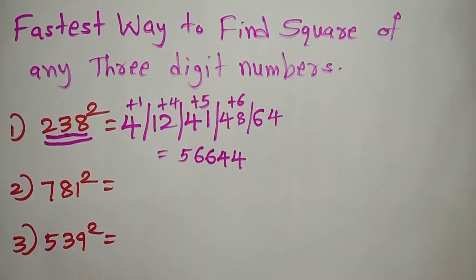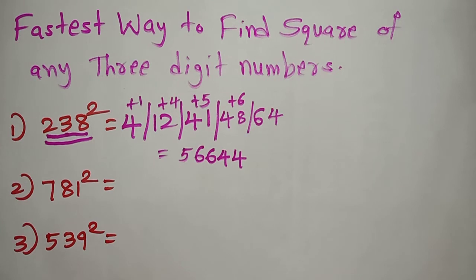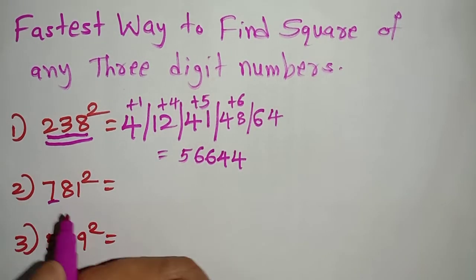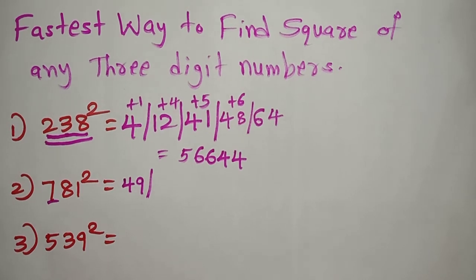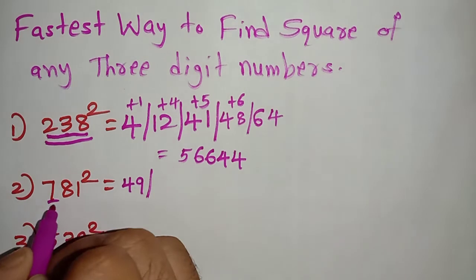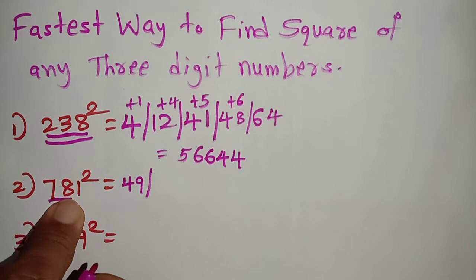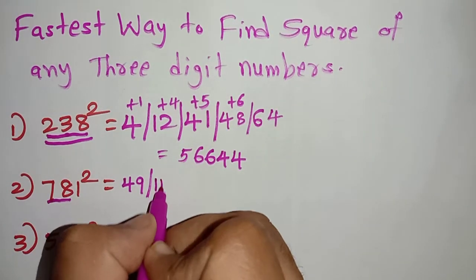That is how to do the square of any 3 digit number. Now let me explain one more time with the next example: 781 squared. The first step is the square of the first number — 7 squared is 49. The second step is duplex of the first two digits. Duplex means we multiply 7 into 8, which gives 56, then multiply by 2 to get 112. So the second part is 112.